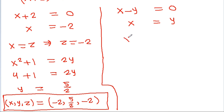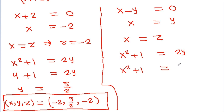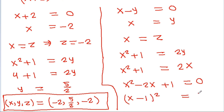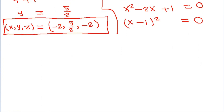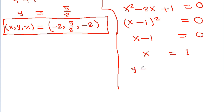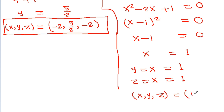Now taking y equals x: x squared plus 1 equals 2y becomes x squared plus 1 equals 2x, so x squared minus 2x plus 1 equals 0, which is x minus 1 squared equals 0. So x minus 1 equals 0 and x equals 1. Then y equals x equals 1 and z equals x equals 1. So (x, y, z) equals (1, 1, 1). This is the fourth solution.